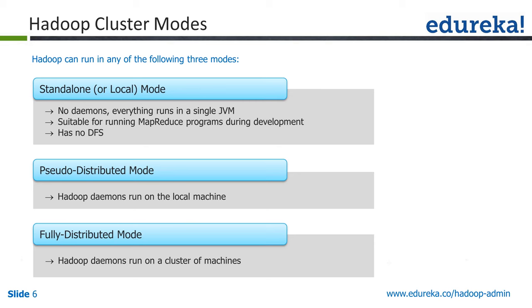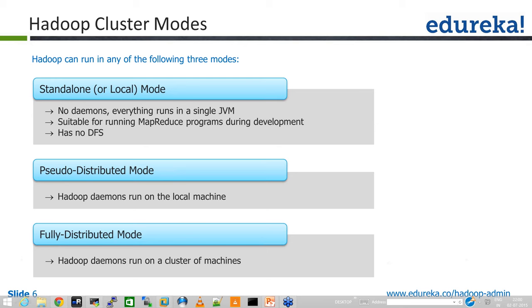In a fully distributed cluster, Hadoop daemons are distributed and run on a cluster of machines. The shuffle mechanism depends on how data is distributed — if data is on 15 nodes, the processing on those nodes will be much less than on a 5- or 6-node cluster with more data. The shuffle will be done across more nodes and hence take very little time. More nodes means mappers, reducers, sorting, partitioning, and combining all complete faster.